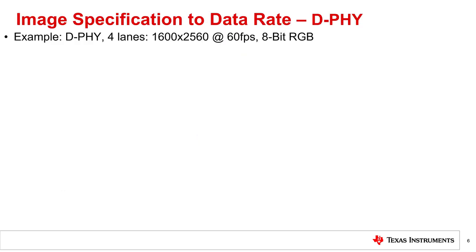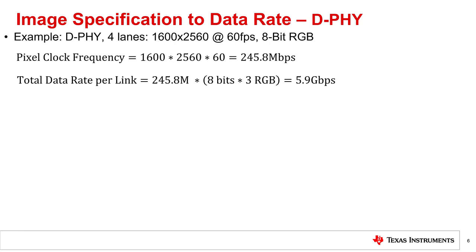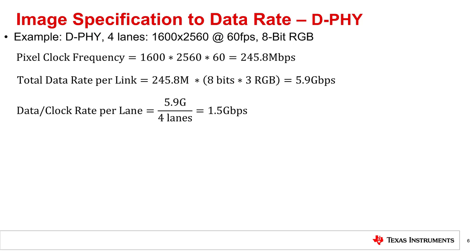Let's take a real-world example to learn how to calculate data rate from image or camera specifications. Let's say we have a camera module that has a 1600 by 2560 resolution at 60 frames per second with 8-bit RGB. First, let's use a D-PHY configuration with four differential data lanes and one differential clock lane for a total of 10 signals. We can calculate the pixel clock frequency, which is simply the resolution times the frames per second. Then we can find the total data rate by multiplying by the image depth. This is our needed link bit rate. From here, we can divide our link bit rate by the number of data lanes to get our data and clock rates per lane. Our needed lane bit rate comes out to be about 1.5 gigabits per second for this example.